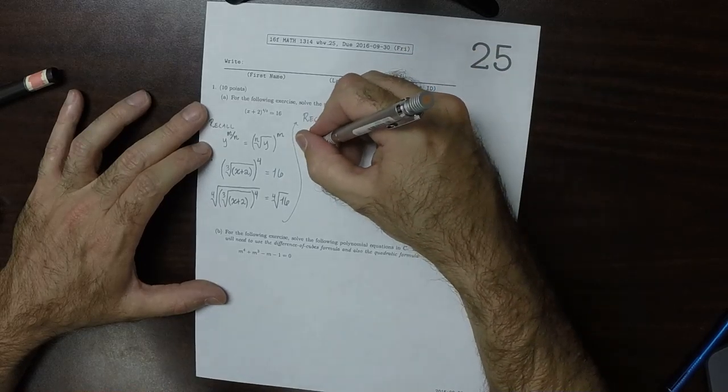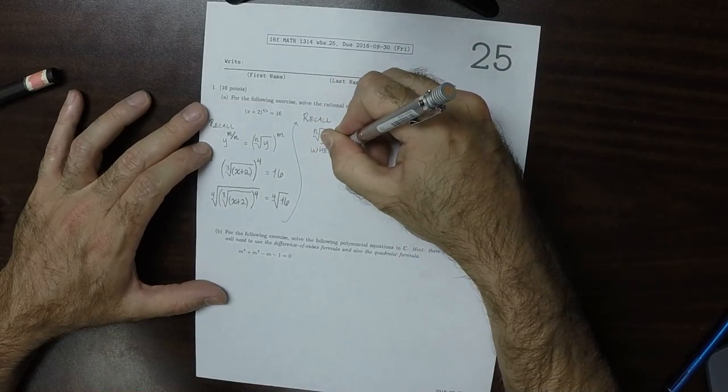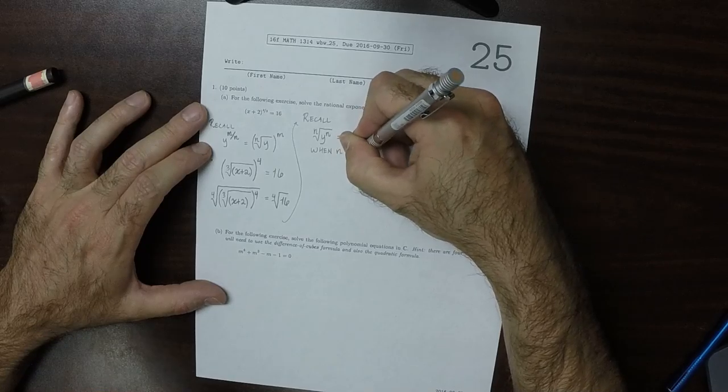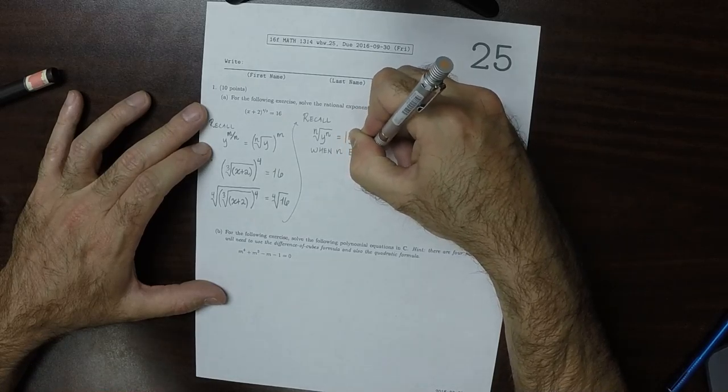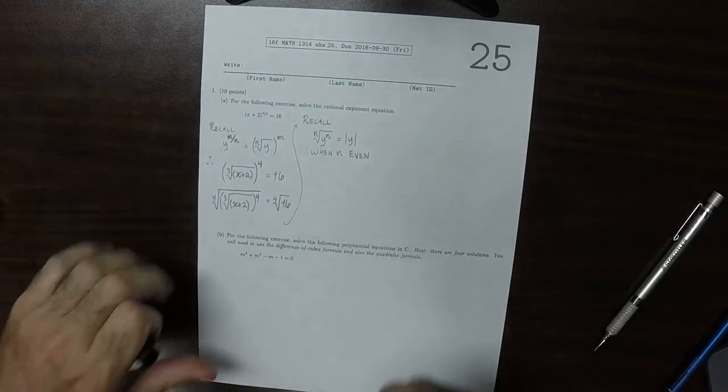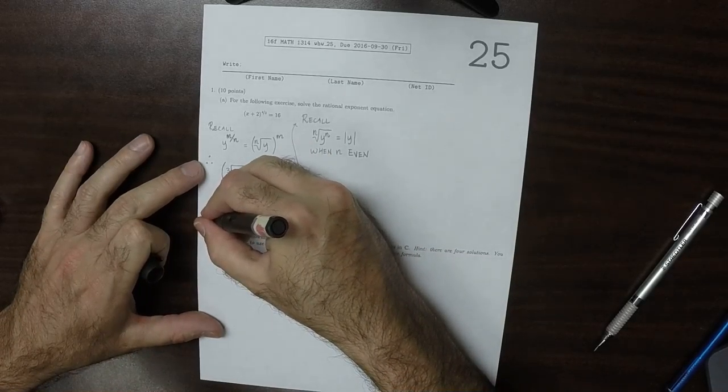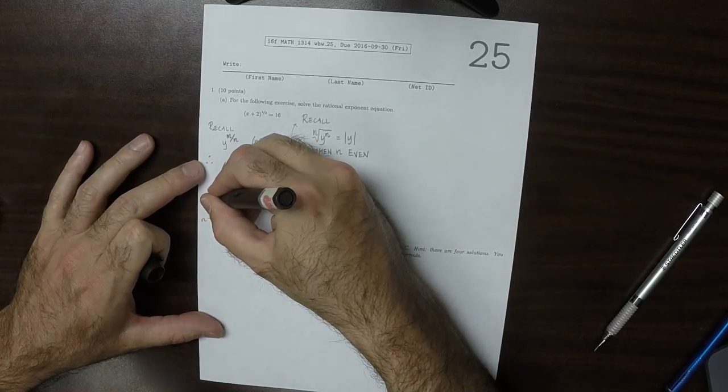This is when n is even. And in this case, n is 4, which is even.